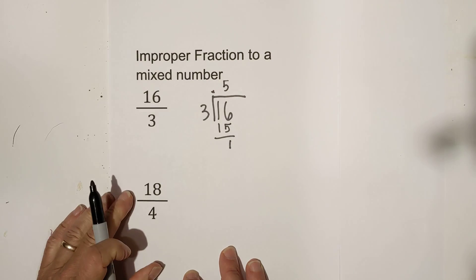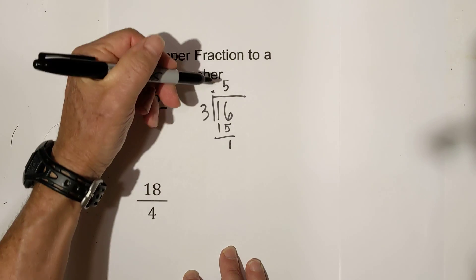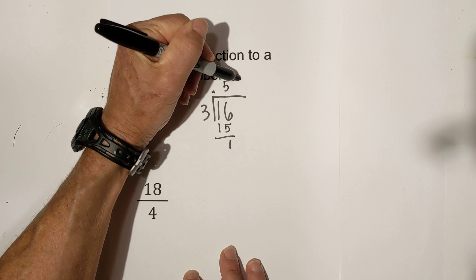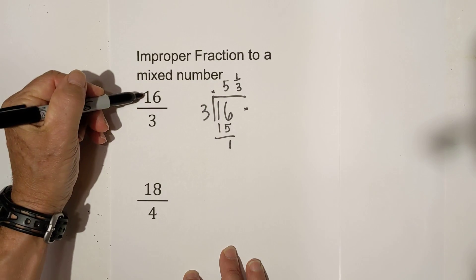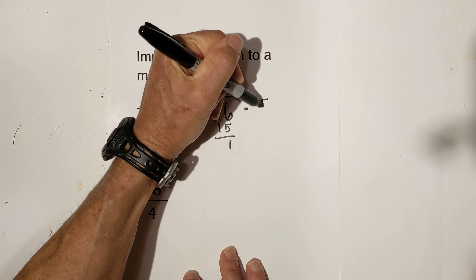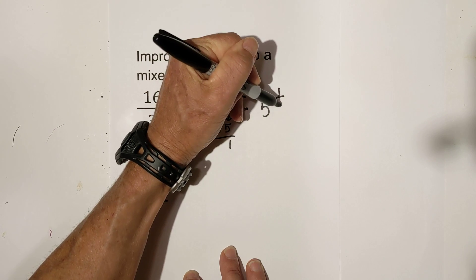When you subtract you have a remainder of 1 and that becomes your fraction, 5 and 1 third. So 16 thirds equals 5 and 1 third.